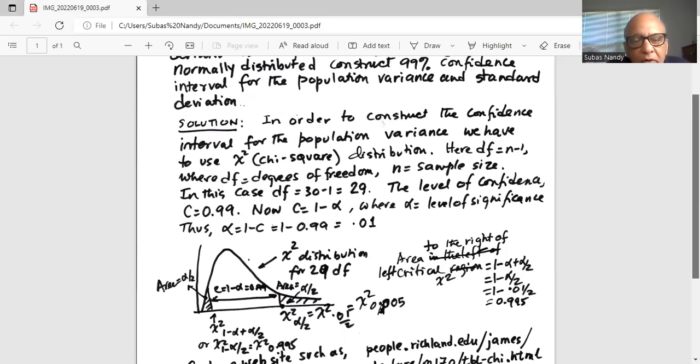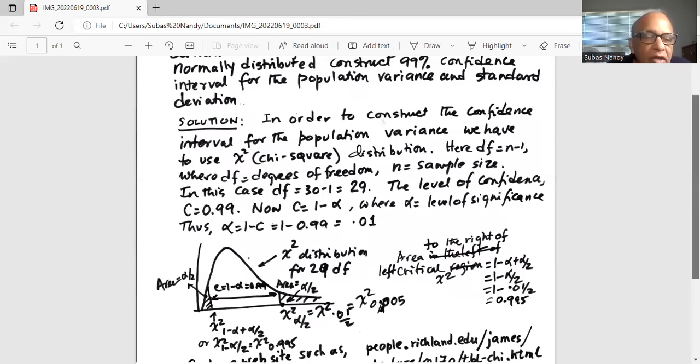The area in the left tail is alpha by 2, or 0.01 by 2, which is 0.005. And the area on the right of the critical value of chi-square alpha by 2 is also 0.005.